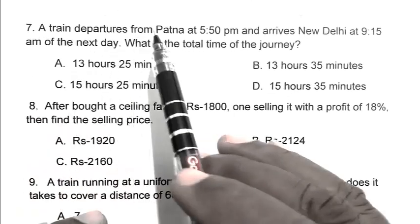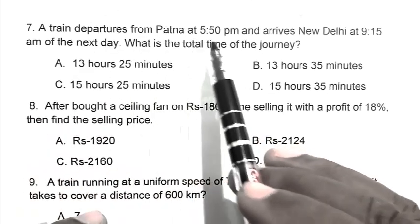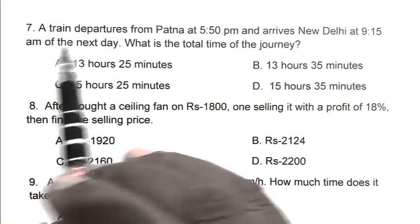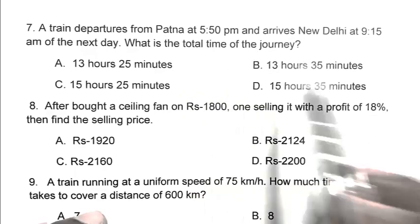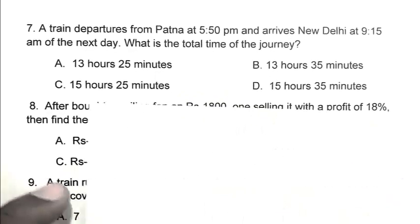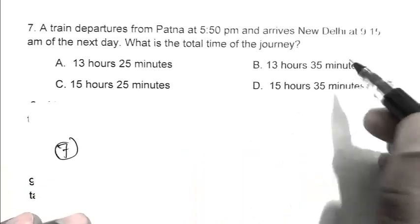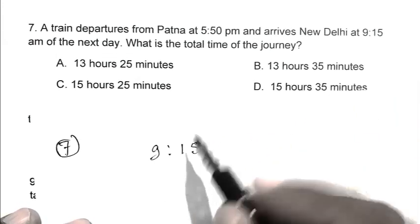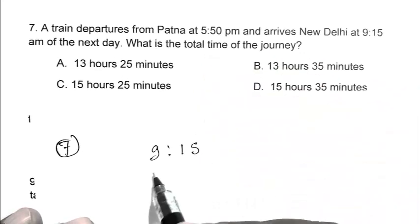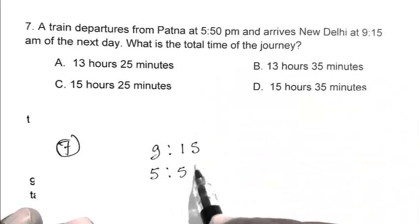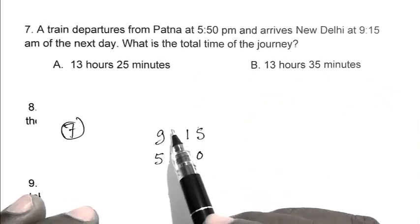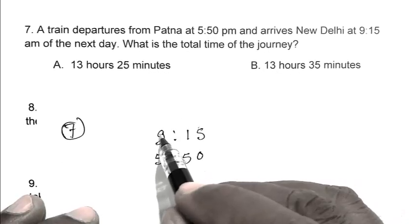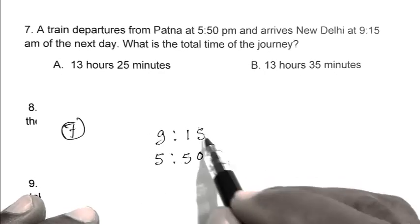Question number 7. A train departs from Patna at 5:50 pm and arrives New Delhi at 9:15 am the next day. What is the total time of the journey? The train reaches New Delhi at 9:15 am and it starts at 5:50 pm. During the journey, the time passes 12 o'clock midnight, so we have to add 12 hours with this number.